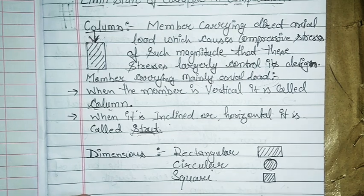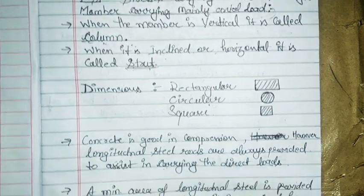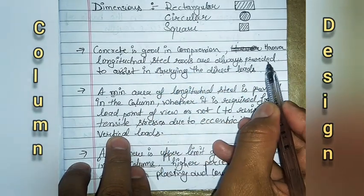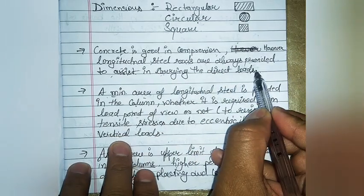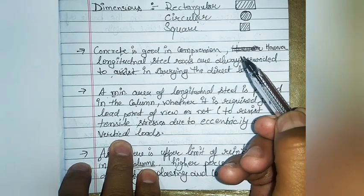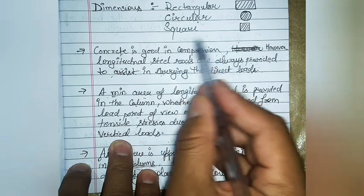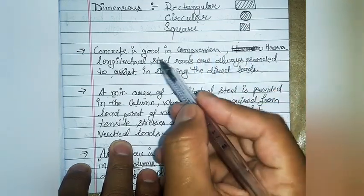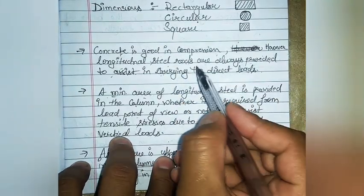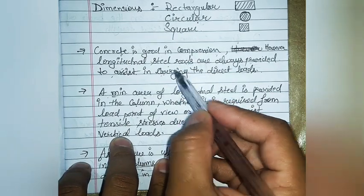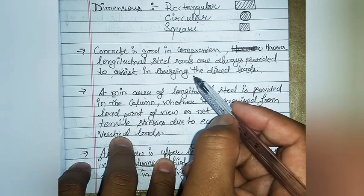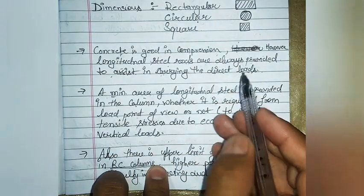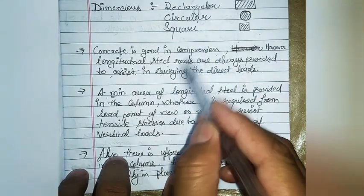Concrete is good in compression. Longitudinal steel rods are always provided to assist in carrying direct loads because we are designing a compression member. Concrete is very good in handling compressive stresses, so someone might think there is no requirement for longitudinal steel in a column. However, we still provide longitudinal steel because sometimes the column takes load with some eccentricity.